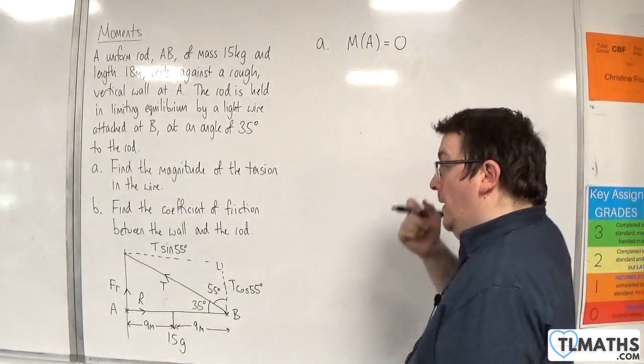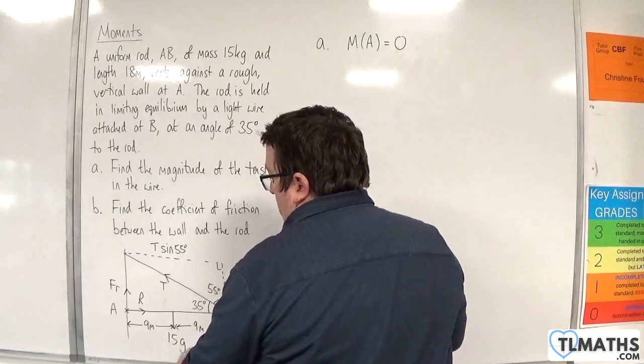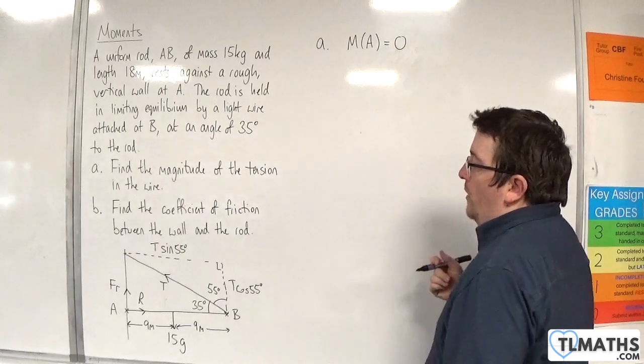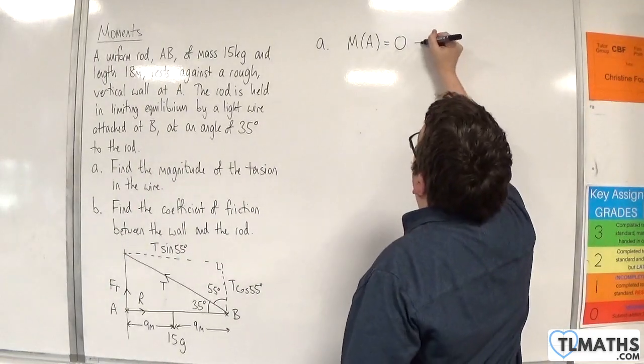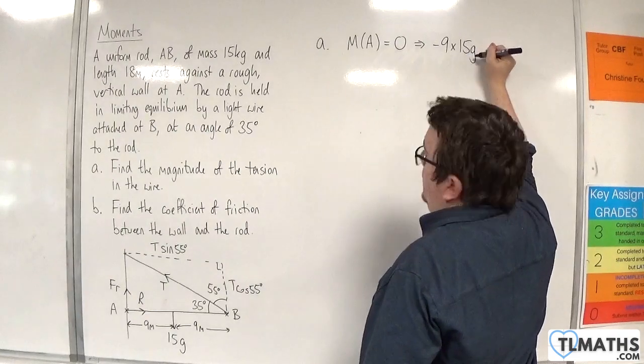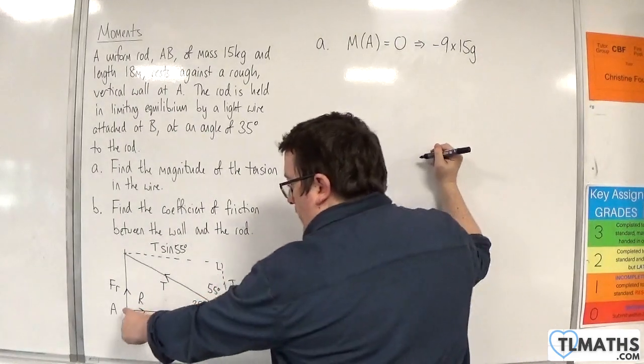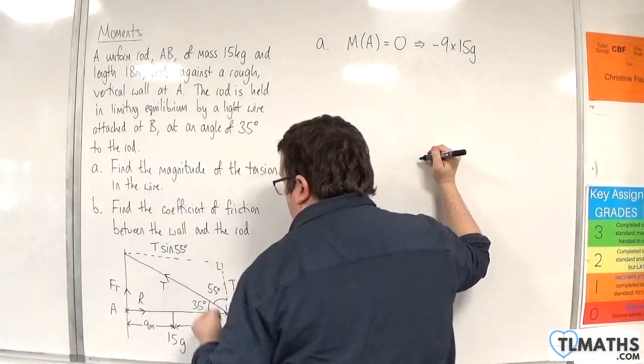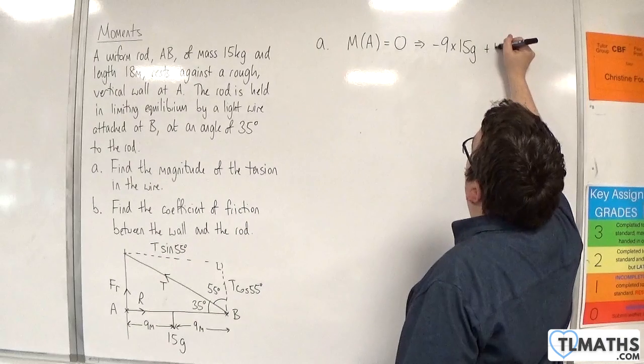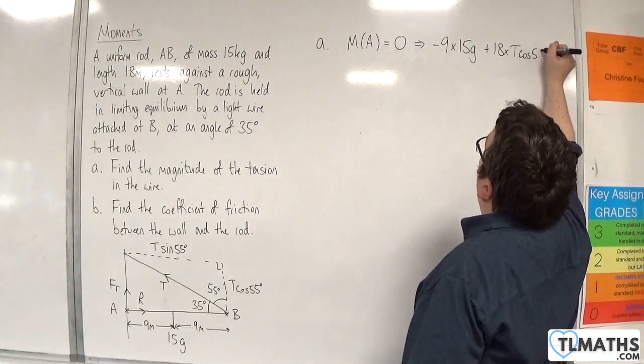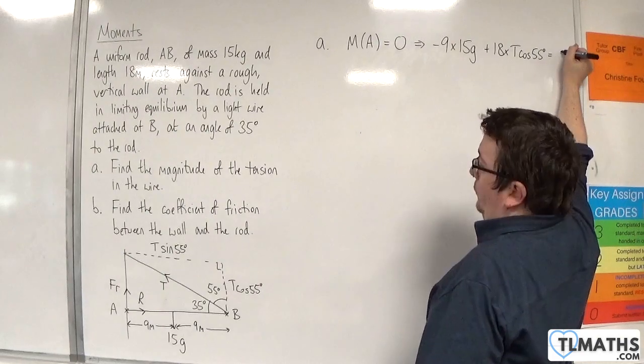I am 9 meters away from the 15g force, and that's going to go round in a clockwise motion. So that's minus 9 times 15g, and then I am 18 meters away from T cosine 55, and that's going in an anti-clockwise motion. So plus 18 times T cosine 55, and that's going to be equal to 0.